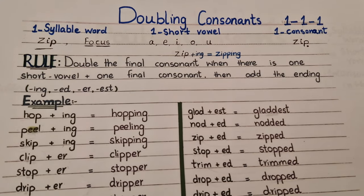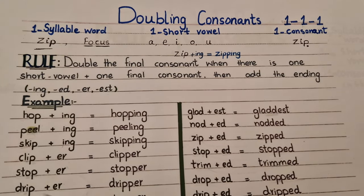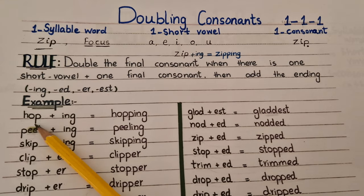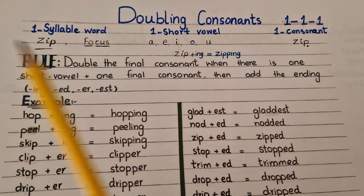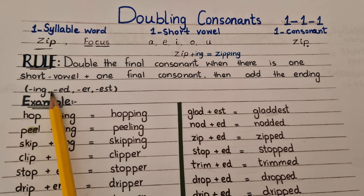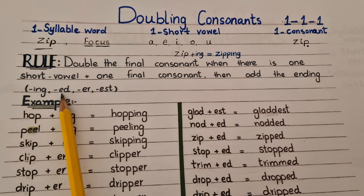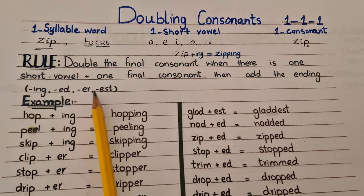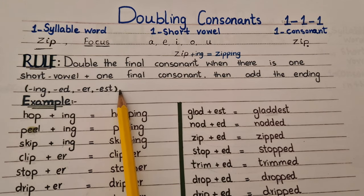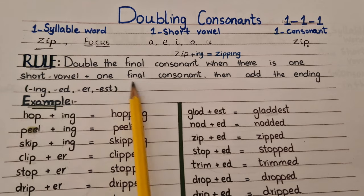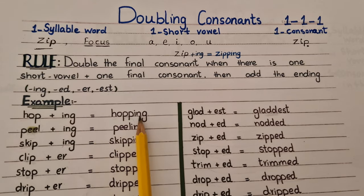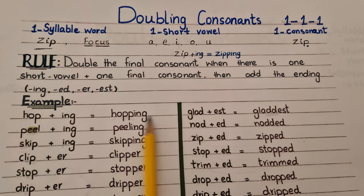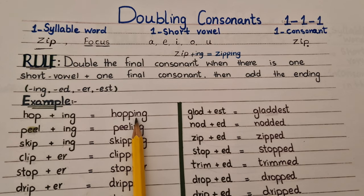Do you know what is meant by doubling consonant? It means when we add a suffix to a word, then we will double the final consonant. Suffixes are -ing, -ed, -er, or -est. When we add a suffix at the end of the word, then we will double the final consonant. This is known as doubling consonant.